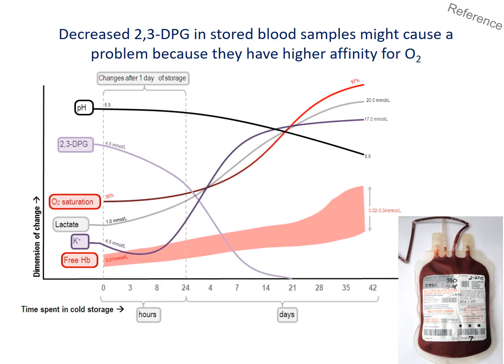If you store a blood sample for too long, eventually the 2,3-DPG level will decrease, and at about 21 days it is essentially zero. That moves the oxygen curve towards the left hand side, meaning the hemoglobin now has a very high affinity towards oxygen but will hardly release any oxygen molecule. So even if a patient receives a blood transfusion with this old blood sample, due to the low level of 2,3-DPG, the patient is not going to get any extra oxygen supply — though eventually the 2,3-DPG level will climb back up after some time.